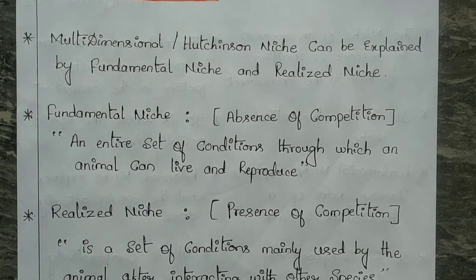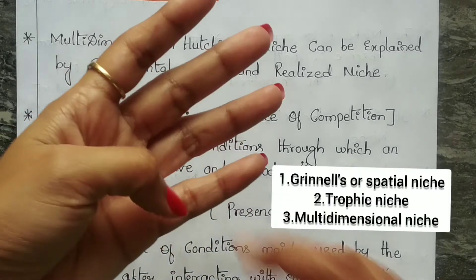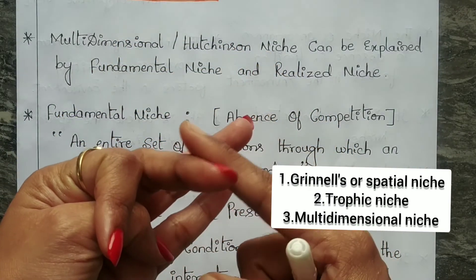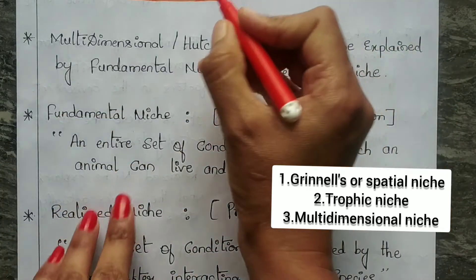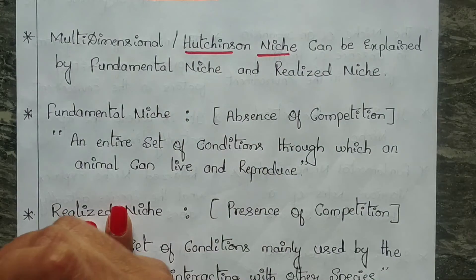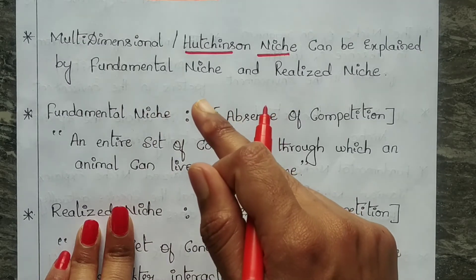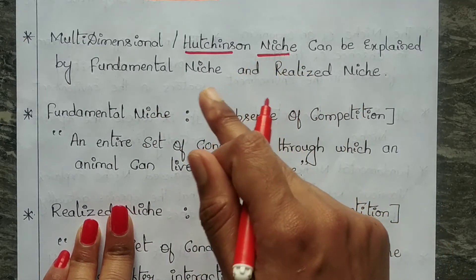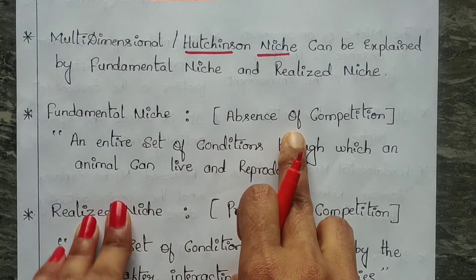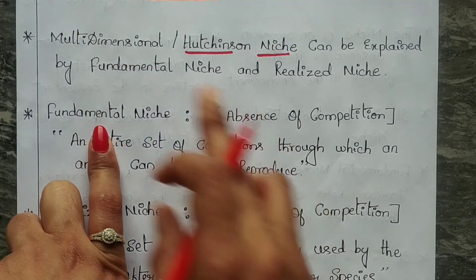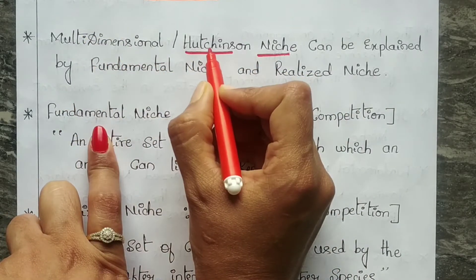In our previous video we studied about ecological niche and its aspects. The types covered were: spatial niche, trophic niche, and the n-dimensional or multi-dimensional niche, also called the Hutchinson niche. For more details on those, you can go watch the previous video.